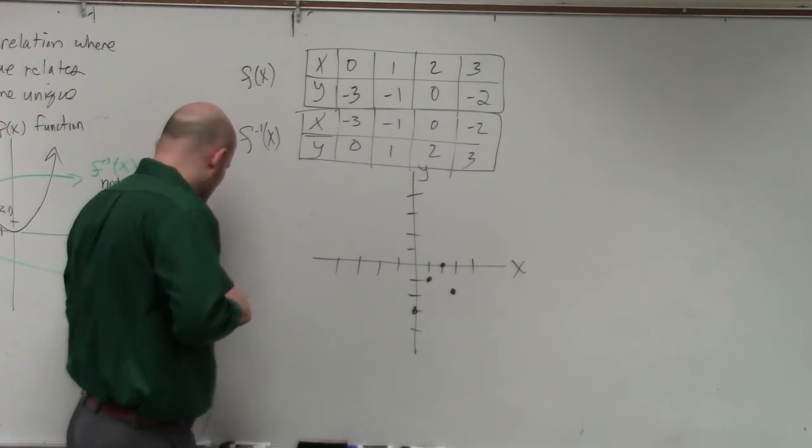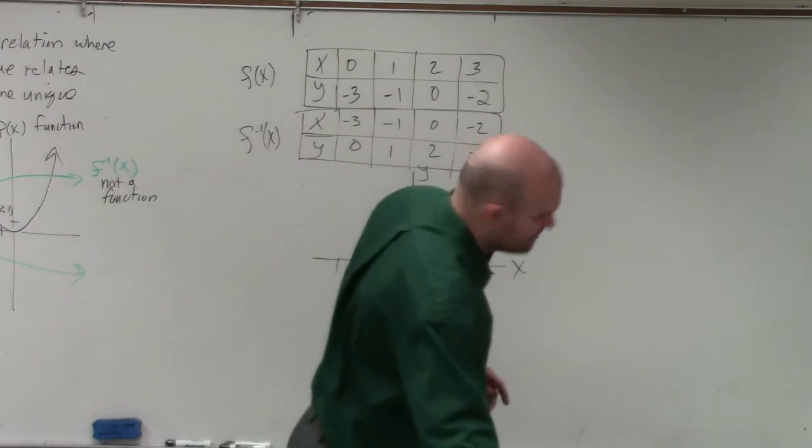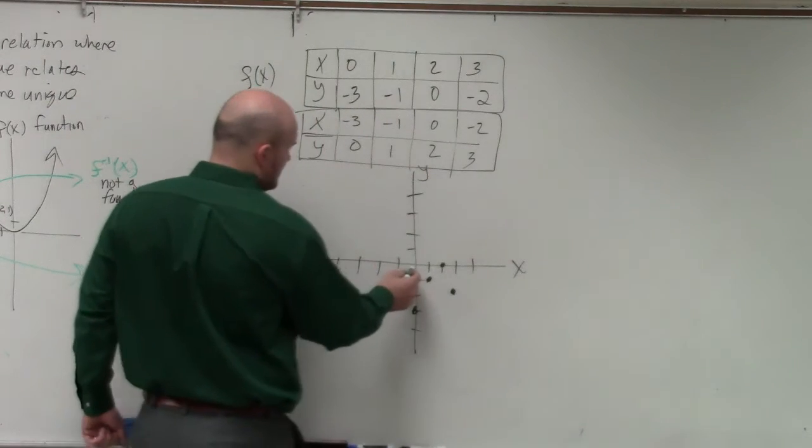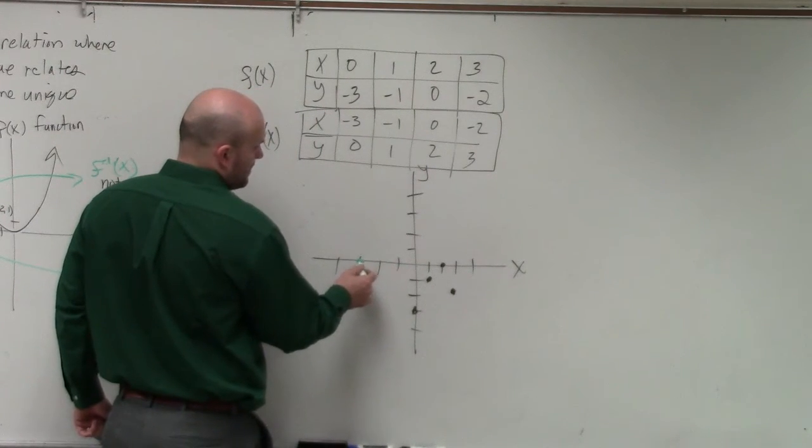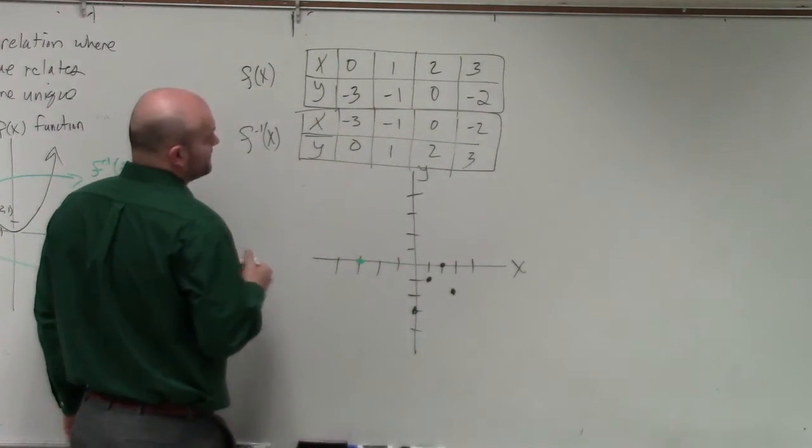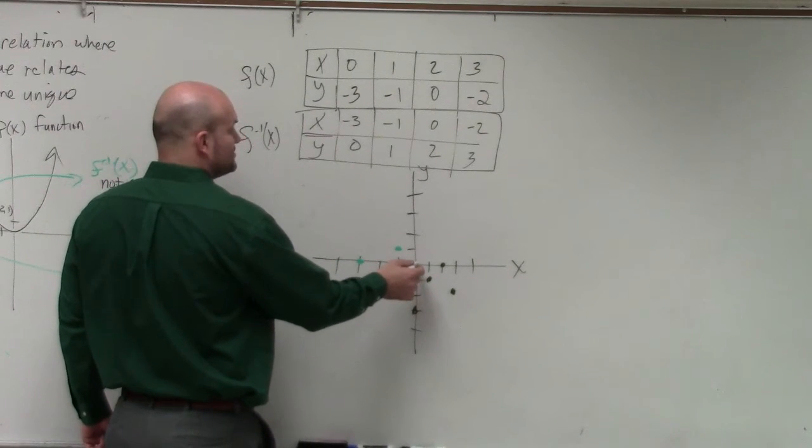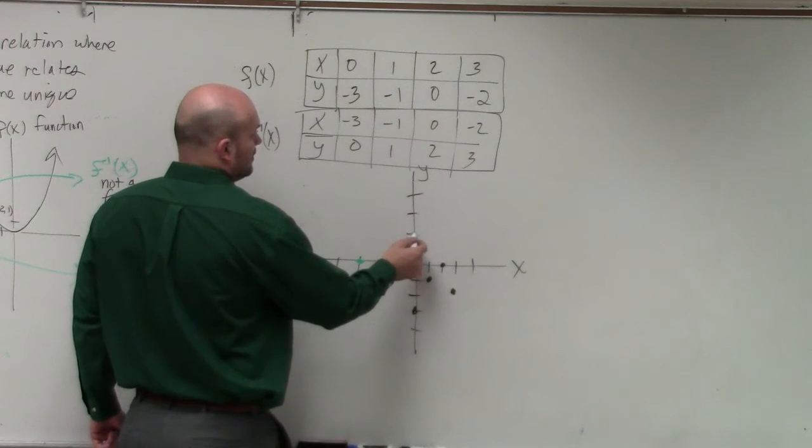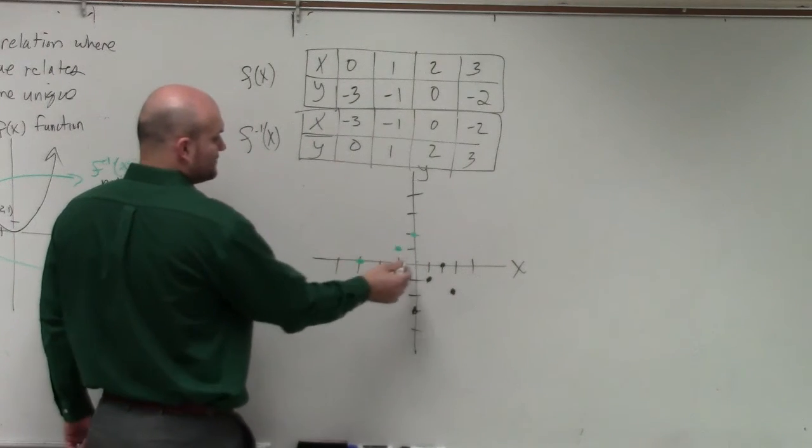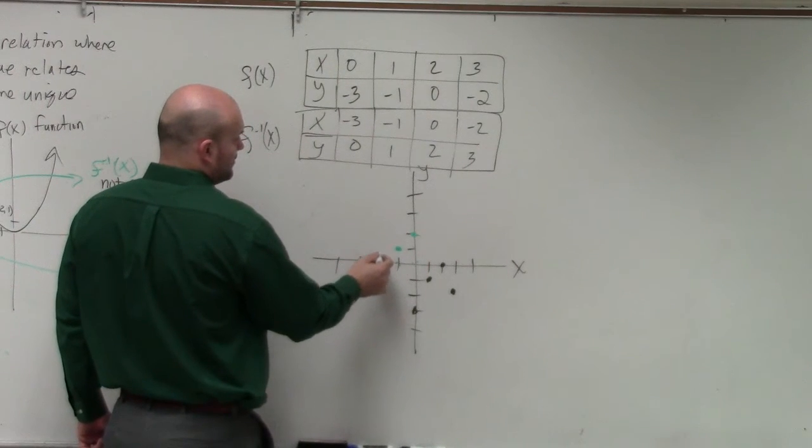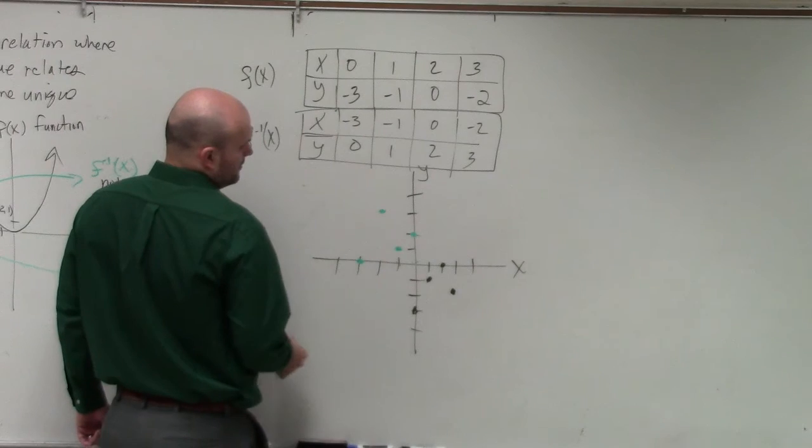So now let's go and plot what these look like. So I'll do negative 3, 0. 1, 2, 3, 0. I have negative 1, 1. I have 0, 2. And I have negative 2, 3. 1, 2, up 3. 1, 2, 3.